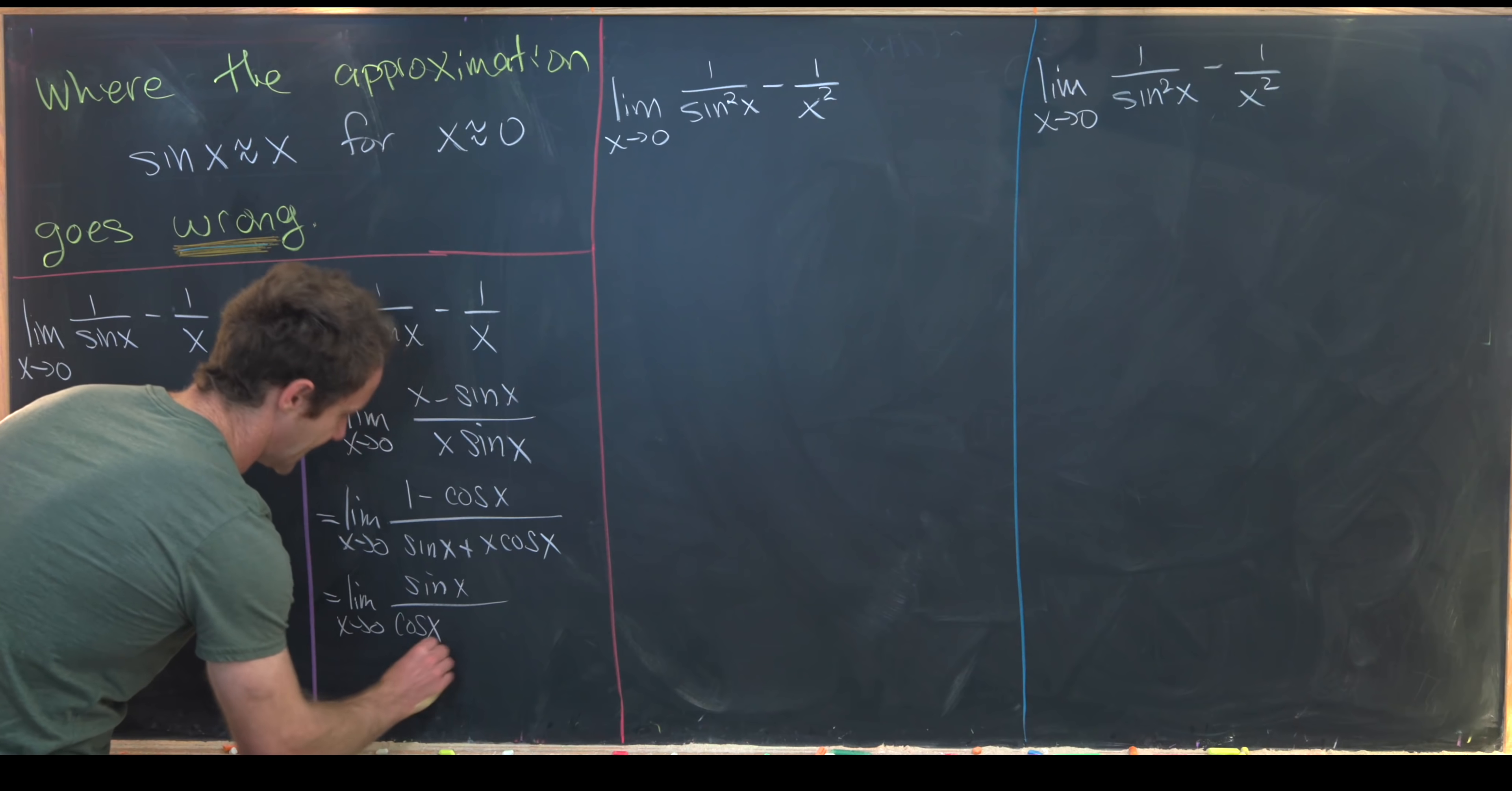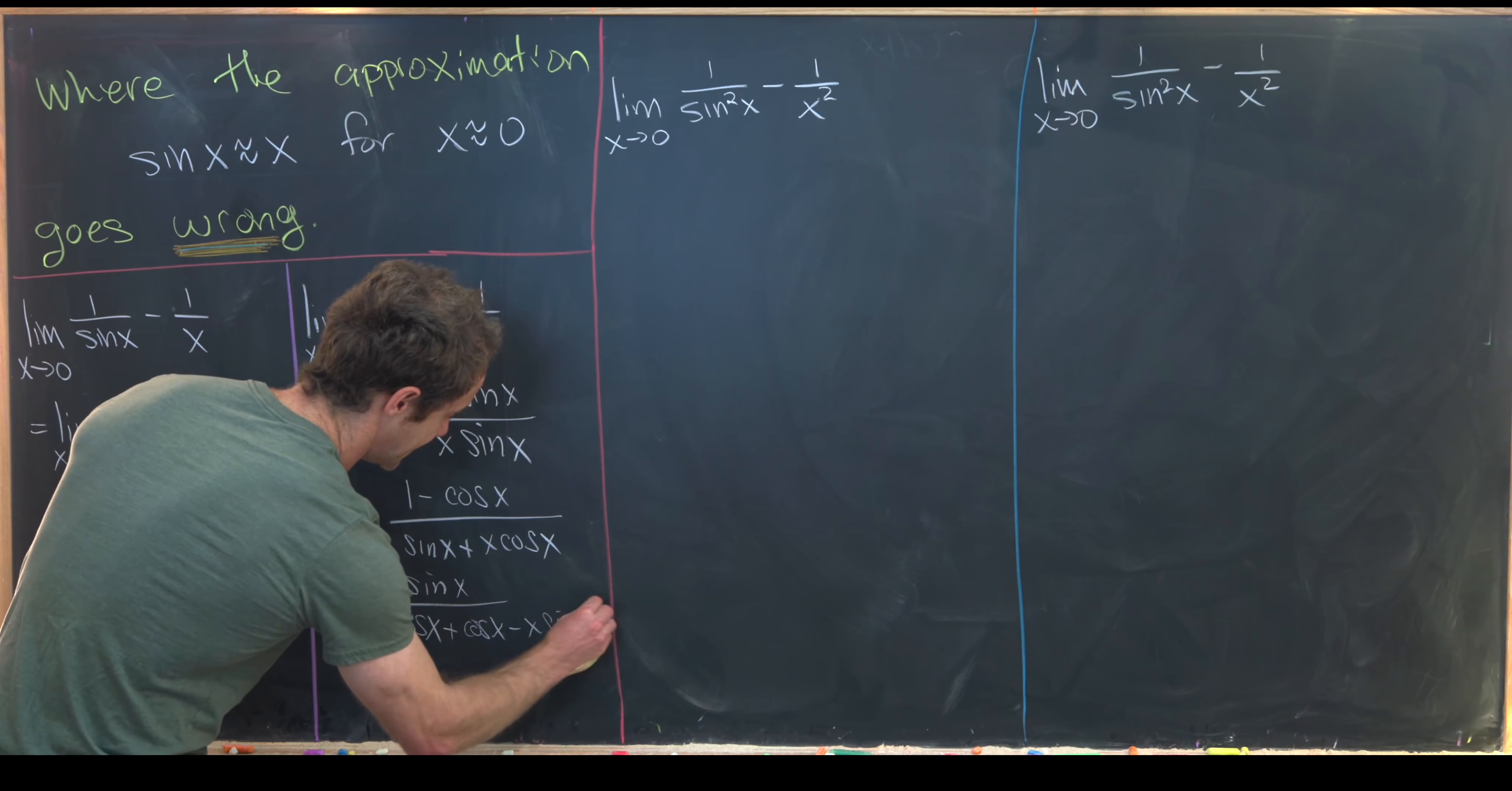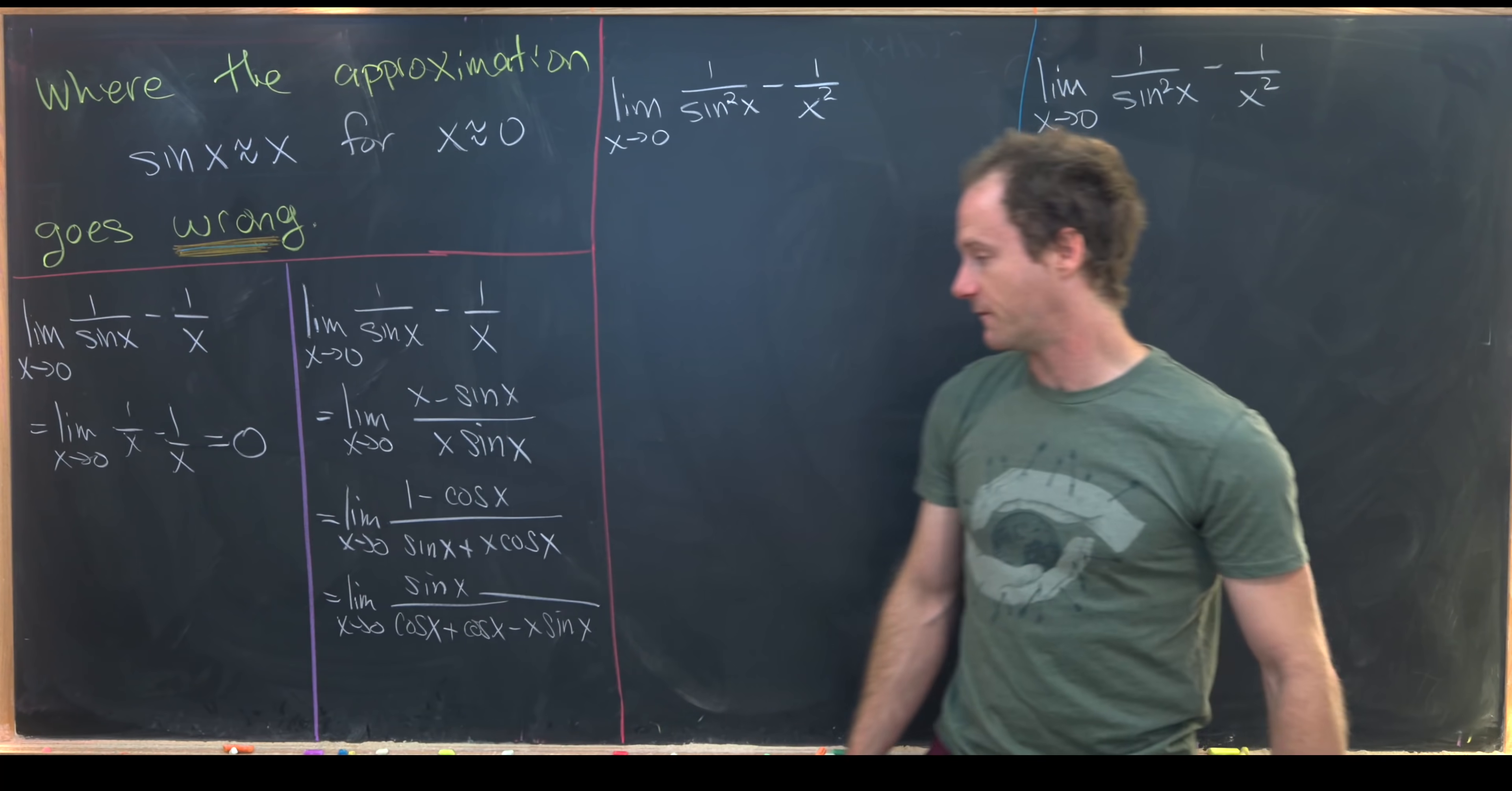And then we have cosine of x plus cosine of x minus x times sine x. So that's the derivative of the denominator.